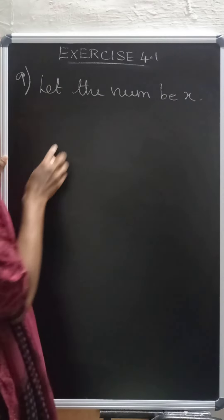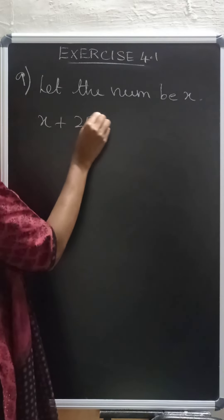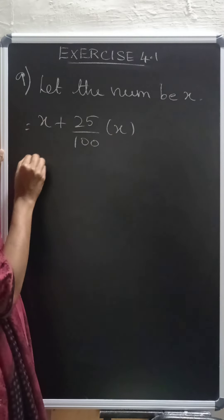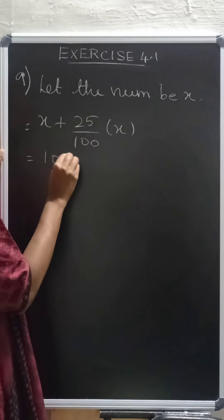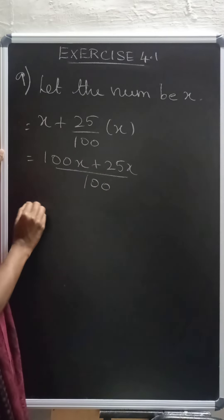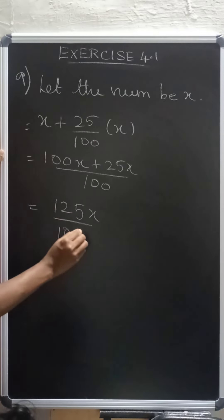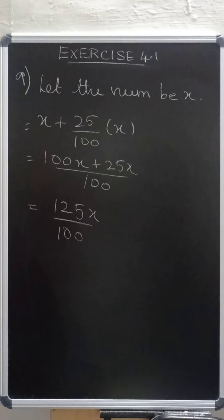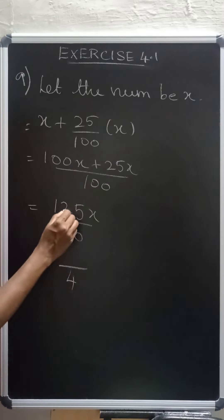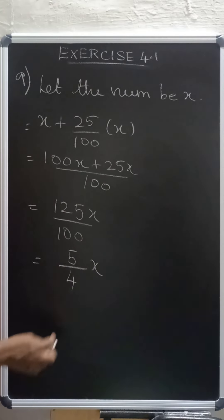So first, the number is increased by 25%. So x plus 25 by 100 of x. Now we should find the answer for this. Take LCM, 100x plus 25x by 100 which is equal to 125x by 100. Now on cancelling these two we get 25 fours are 100 and 25 fives are 125. So 5 by 4x.